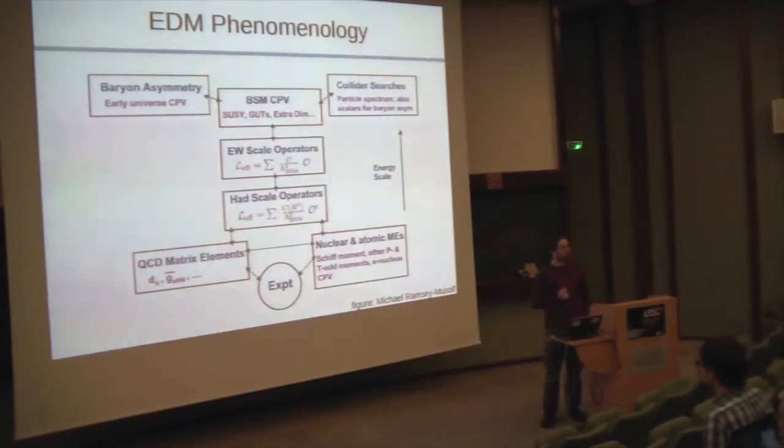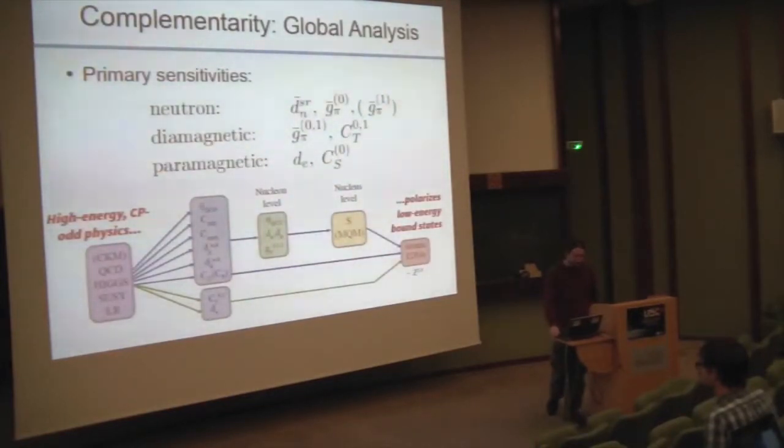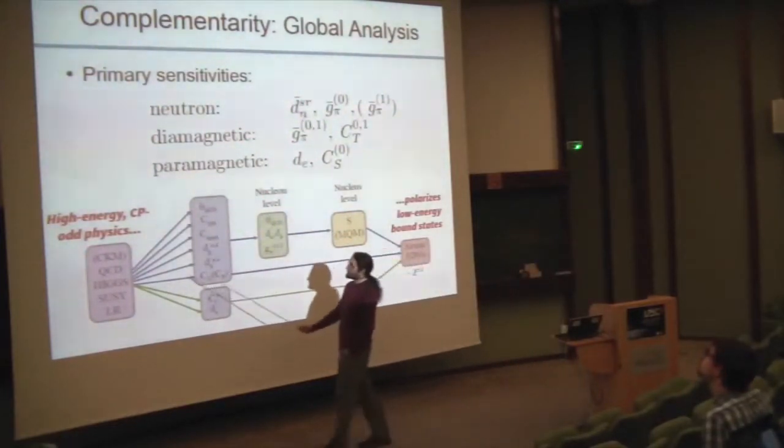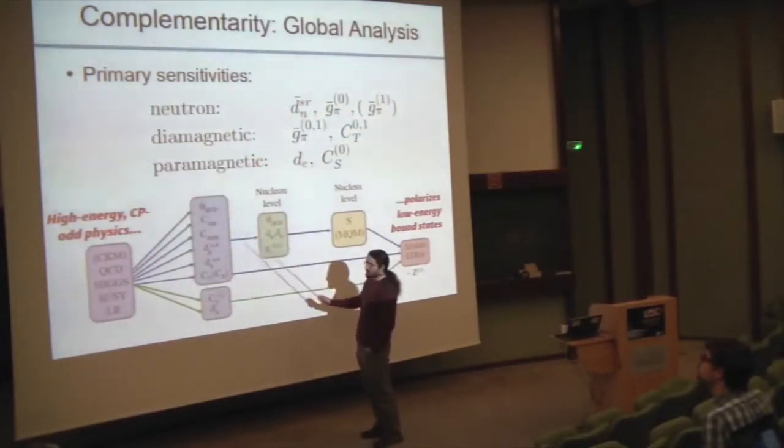It turns out that there are about 13 independent parameters that matter if you make some reasonably general assumptions about how you can write down the CP violation in an effective field theory. At the hadronic and nuclear level you have a much smaller number of parameters that can be jointly constrained by a set of half a dozen experiments or so. This is just a preview of the general scheme of dependencies.